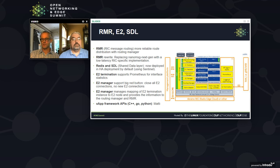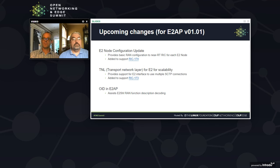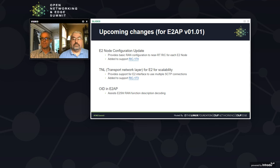The E2 manager also manages multiple E2 termination instances — currently a static mapping with no dynamic scaling, which is future work. Upcoming changes include adapting to the new E2 AP v1.1 protocol, reintroducing configuration update, changes to the transport network layer for better scalability and failover, and introducing object identifiers for E2 service models — making it easier to find the correct E2 service model in an xApp, especially important in multi-vendor environments.